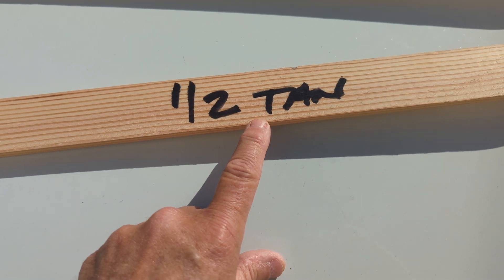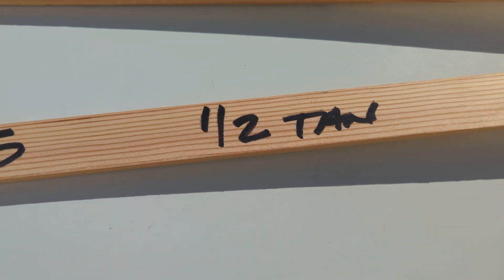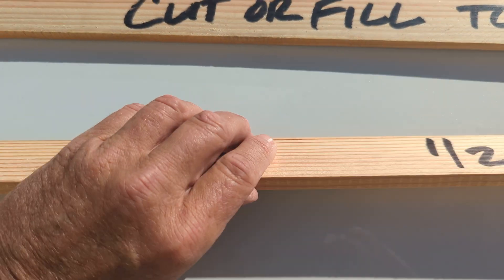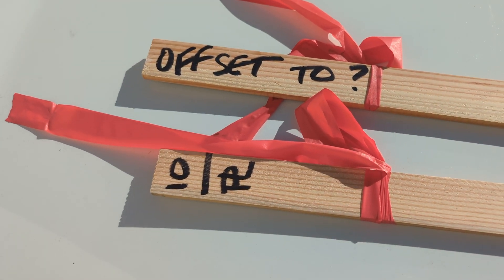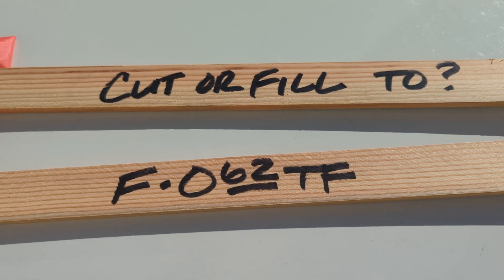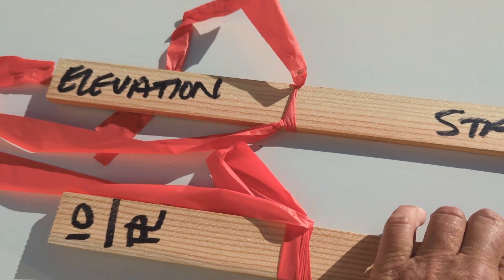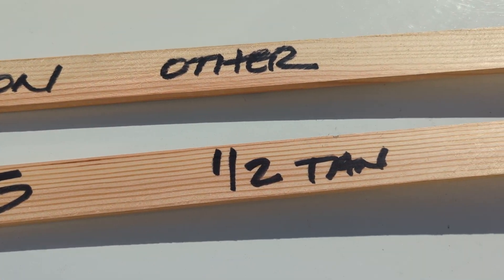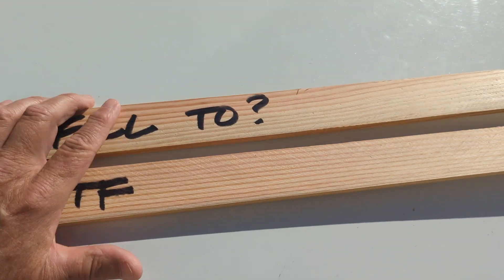And then any other description. So let's say this was a half tangent — it's just a halfway point between the tangent line, maybe there's an angle point going on. So that's it. You're going to have an offset to something, a cut or fill to what it's being graded to, elevation, possibly a station, and then any other description. I use four-foot lath, but this stuff can be put on two-foot lath as well.